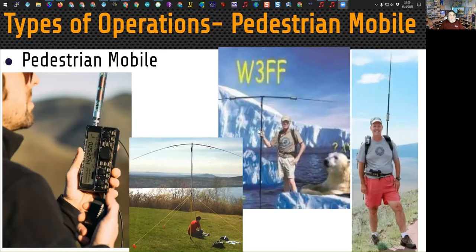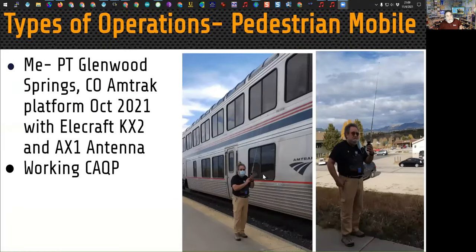One call sign that's famous is W3FF Buddy Poles — a very popular antenna for pedestrian mobile operation. This past year I've been trying to complete the clean sweep of all the QSO parties for the QSO Party Challenge. The problem was I was on a train heading to California during the California QSO Party weekend and wouldn't arrive until after the party ended. So I had to take advantage of a 10-minute stop on Amtrak, jump out, and try to get at least two contacts. I was able to get three contacts at Glenwood Springs, Colorado, using my KX-2 and the AX-1 antenna, then got an in-state stop in Sacramento.